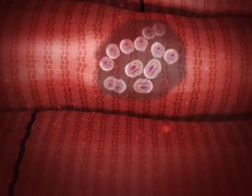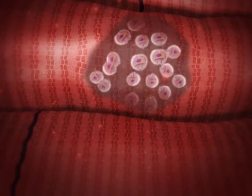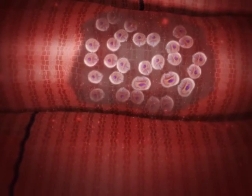Observe how many amastigotes are accumulating during the division process. They can occupy the entire cytoplasm of the host cell.